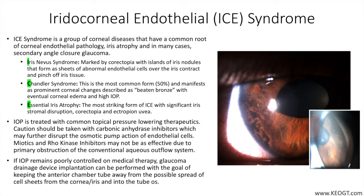IOP is treated with common topical pressure-lowering therapeutics, similar to other forms of glaucoma. Miotics and Rho kinase inhibitors may not be as effective due to primary obstruction of the conventional aqueous outflow system. Trabeculectomy has not been met with great success due to closure of the sclerostomy, and laser trabeculoplasty is also poorly effective. If IOP remains poorly controlled on medical therapy, glaucoma drainage device implantation can be performed, with the goal of keeping the anterior chamber tube away from the possible spread of cell sheets into the tube opening.